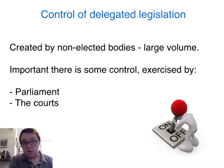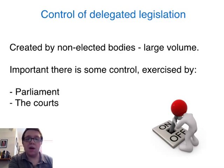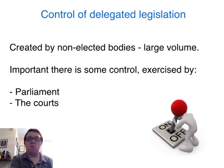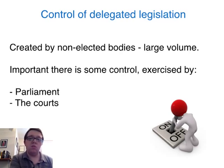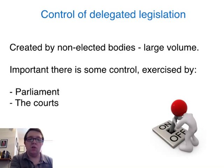Delegated legislation is created by non-elected bodies, and if we think about statutory instruments created by government ministers, there are over 3,000 made each year. This certainly poses problems with volume, particularly if you want to identify how laws work or which laws are in existence. So it's important that parliament, who is giving that power through an enabling act, exercises some control.